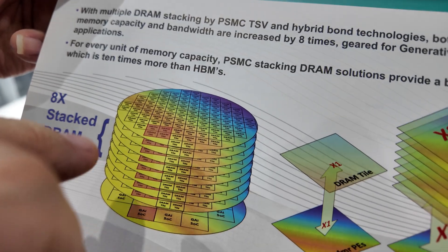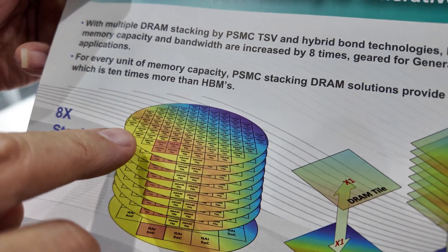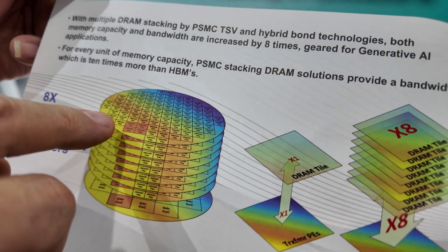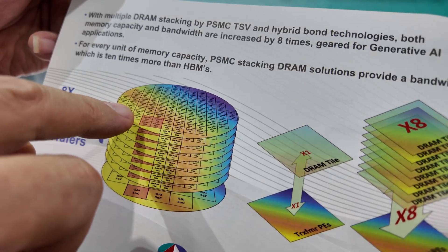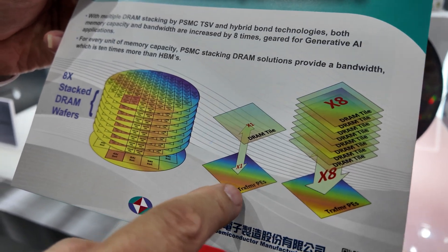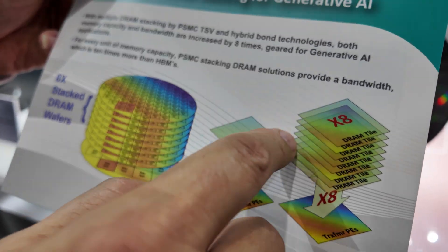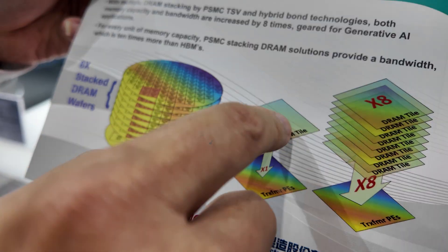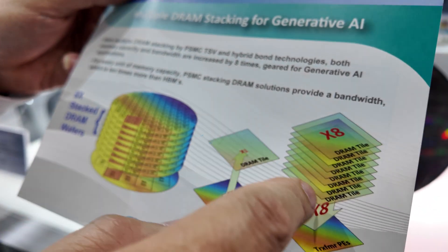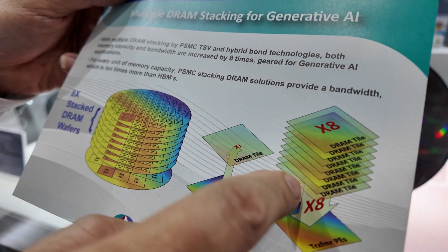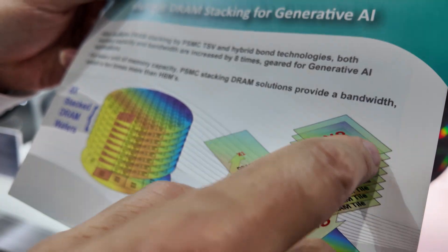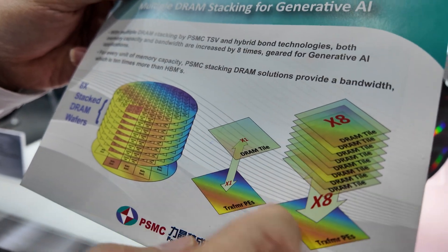For the wafer, they can closely connect with the logic chip, providing big bandwidth and also capacity. If you have one layer, it has only one unit of bandwidth and capacity. But if you put eight layers together, you have eight times the capacity and eight times the bandwidth.